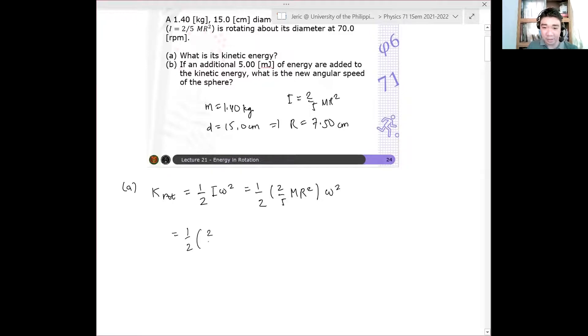So we'll just plug and play. This is simply one half by 2 fifths—2 fifths times mass is 1.4 kilograms times the radius, which is 7.5 times 10 to the minus 2 meters, quantity squared. I'm using SI units, by the way, times the angular velocity, which is 70 RPM. Wait, 70 revolutions per minute, quantity squared.